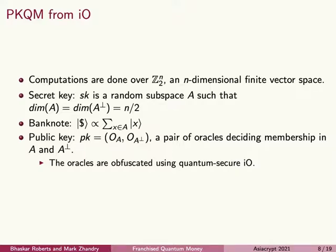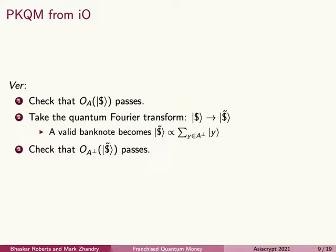To verify the banknote, we'll make two measurements — one in the computational basis and one in the Fourier basis. First, we check that the banknote is a superposition of elements of A, where OA is an oracle that decides membership in A. Then we take the quantum Fourier transform and check that the result is a superposition over elements of A-perp. After this step, the valid banknote is the only state that will have passed verification with perfect probability. But in order for this to work, OA and OA-perp are included in the public verification key, and as a result, we need to obfuscate those oracles using IO so that the adversary doesn't learn what A is.